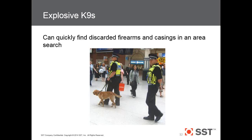Explosive canines. Being a prior canine handler, these are near and dear to my heart. These dogs are amazing — they can quickly find discarded firearms and shell casings well outside the 25-meter area, especially if they get on scent and start following a person's scent trail. That would obviously be a dog trained in tracking and explosives detection, but it's something worth considering.